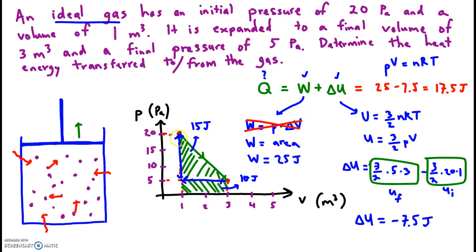Now if the graph looked like this — almost touching the axis — the area under the graph would be much, much less. So the work would be less, but delta u would be the same. Work cares about the particular path on the graph, but delta u only cares about where you start and where you end. So if work were much less, the negative 7.5 could actually win out, and heat would maybe have been transferred out of the system.